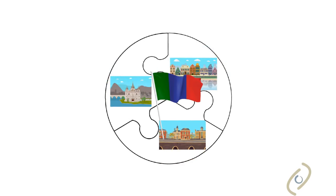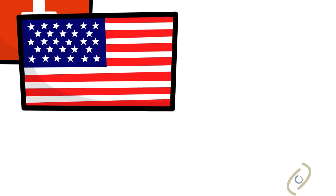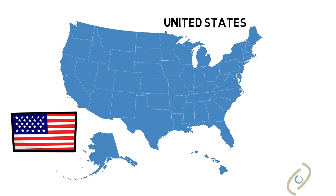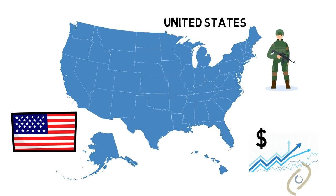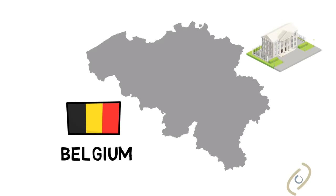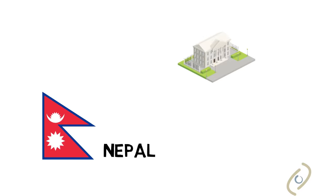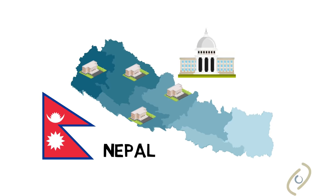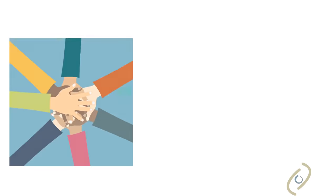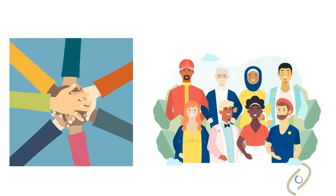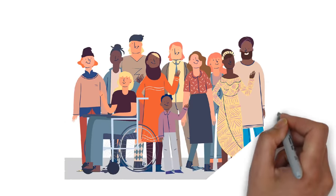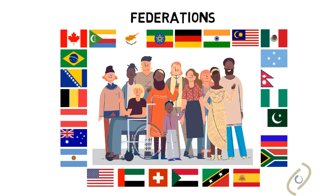In some cases, federalism was chosen to bring together formally separate units into a new country — like Switzerland, the United States, and Australia. This allowed small independent units to maintain their own uniqueness while forming a larger country for security and economic reasons. In other cases, federalism occurs because a unitary country rearranges itself into a federal one, like Belgium or Nepal, to preserve national unity by mitigating conflict between different ethnic, linguistic, or religious groups. The design of the federal model is unique to each country's history, its social and economic conditions, and its local traditions and preferences.